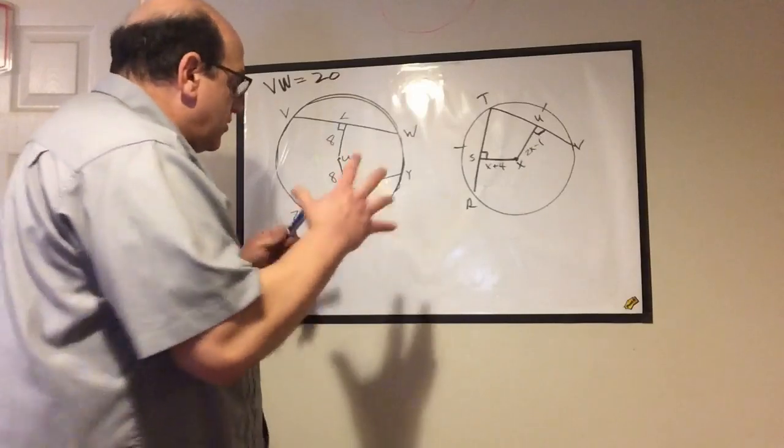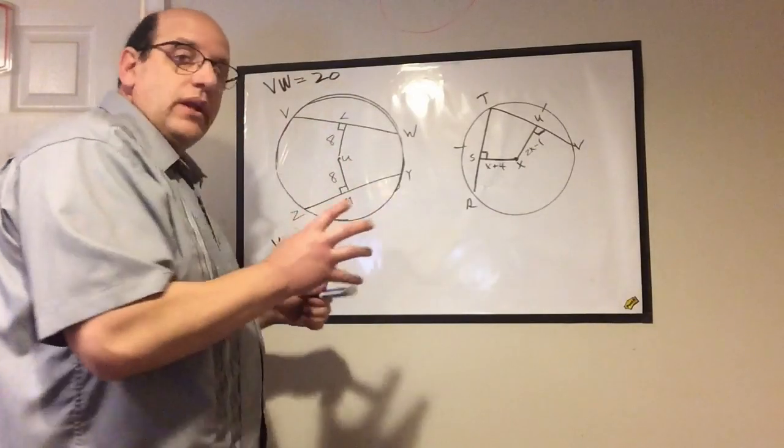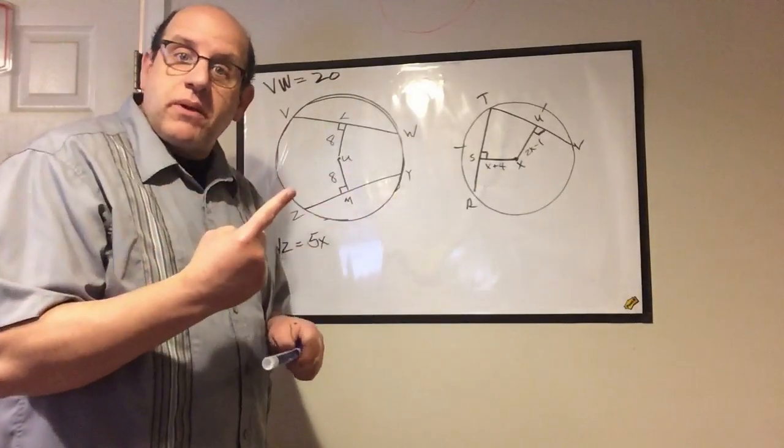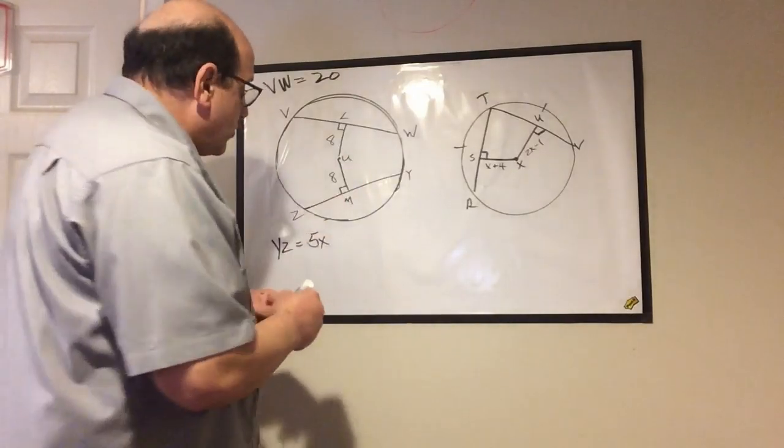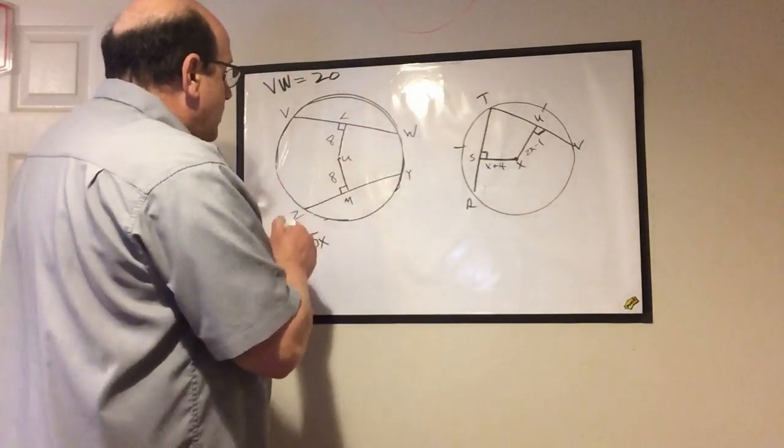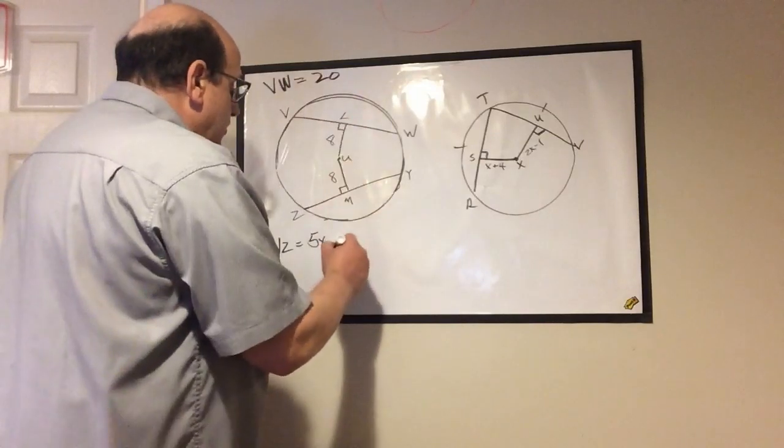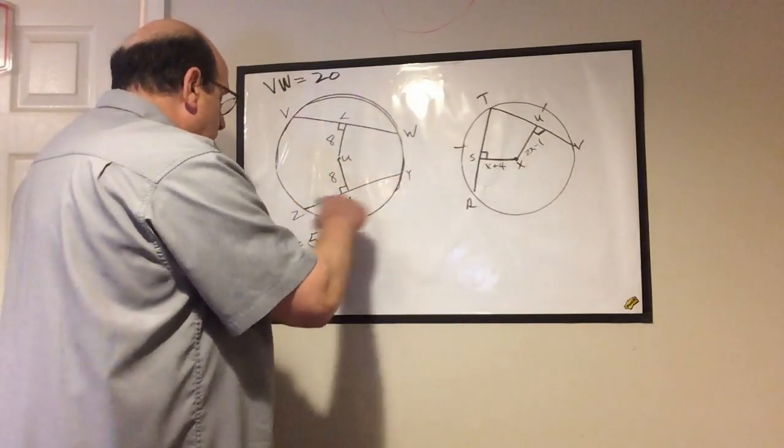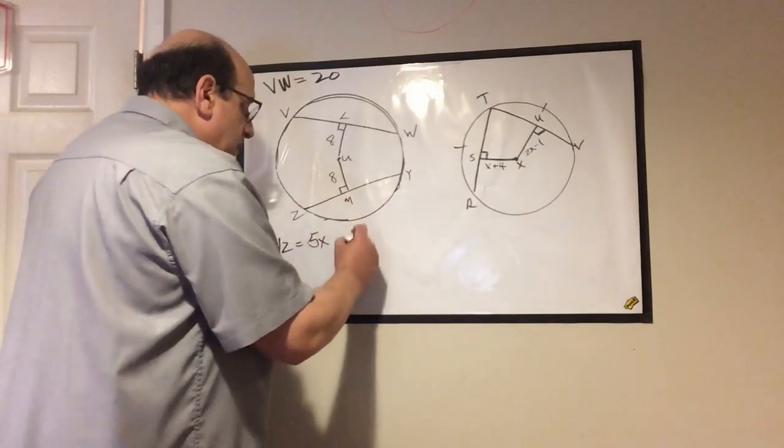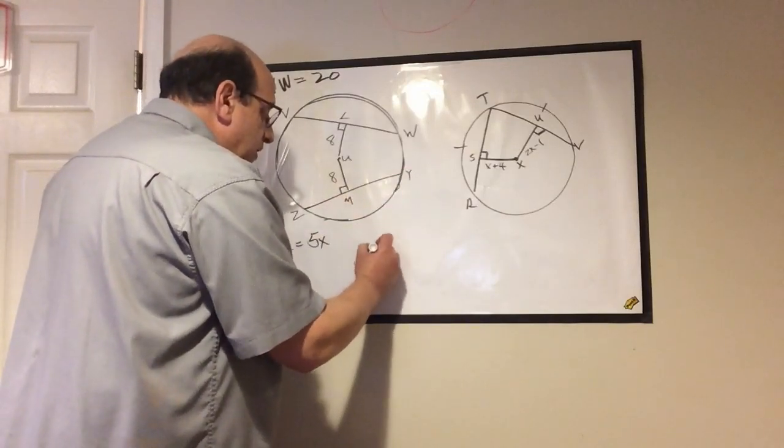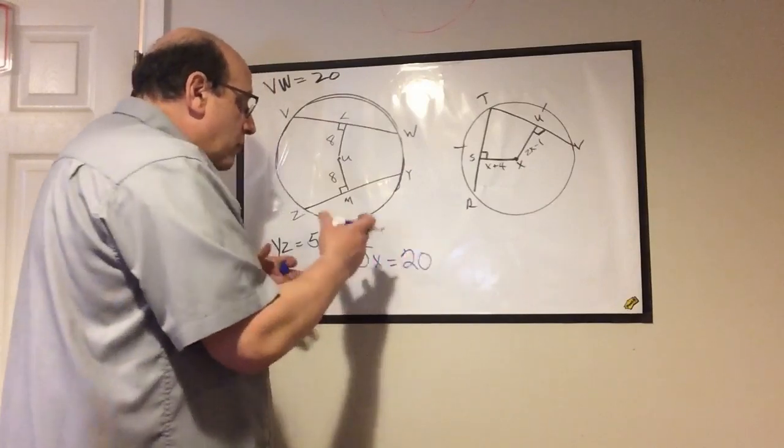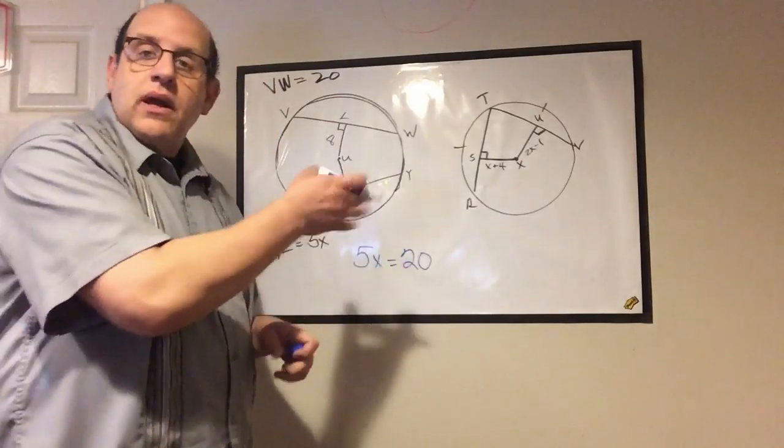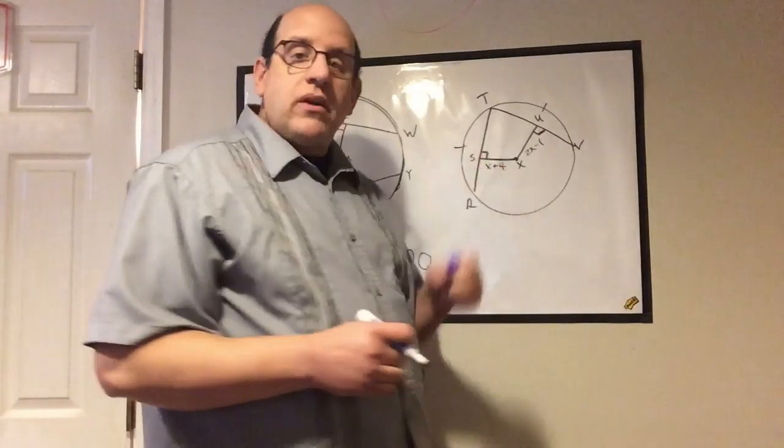All we're going to do is set up our equation. We're setting up a single step equation, so it should be really simple. The length of VW is 20 and the length of YZ is 5x, so 5x equals 20. What number times 5 equals 20? You know this. I'm going to move on to the next one.